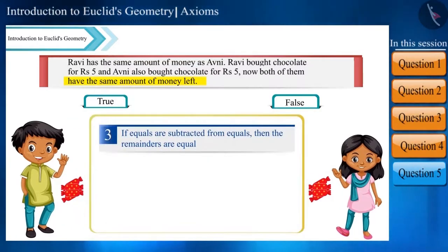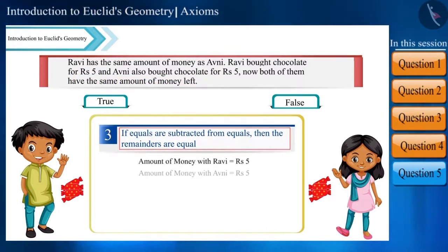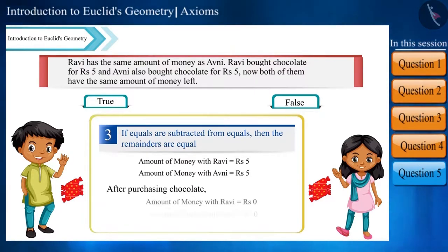Euclid's third axiom says that if equals are subtracted from equals, then the remainders are equal. Ravi and Avni had an equal amount of money. They spent an equal amount of money, so the remaining amount of money left with them will also be equal. Therefore, this statement is true.